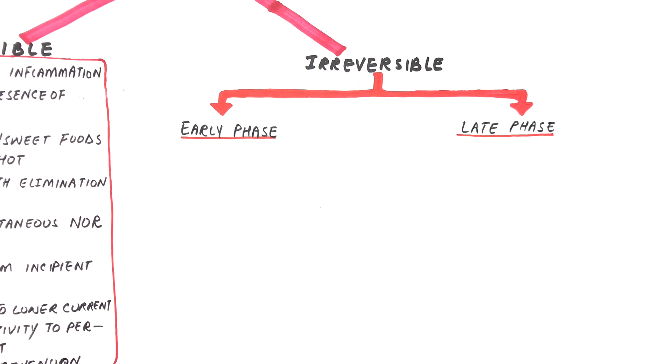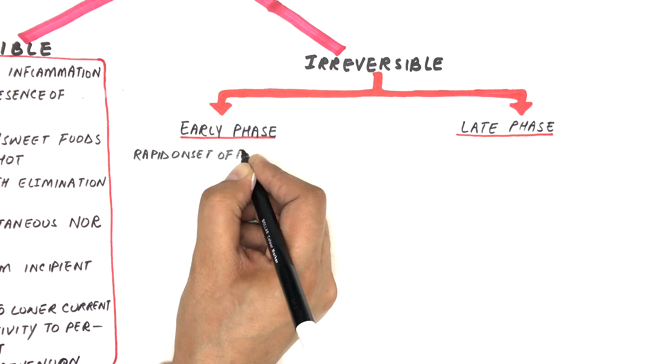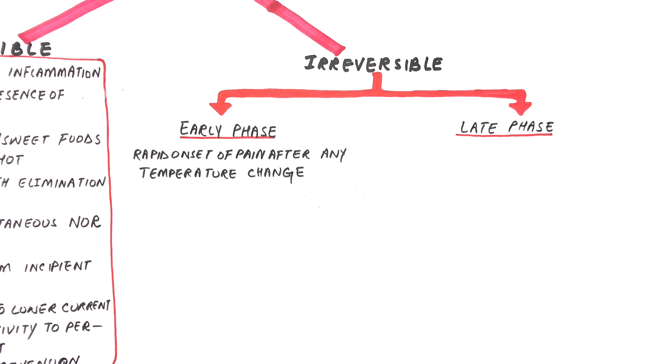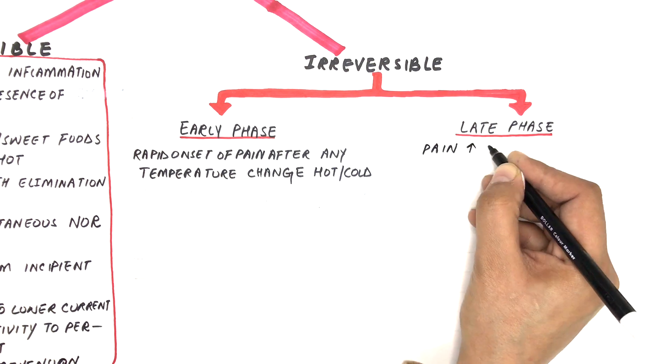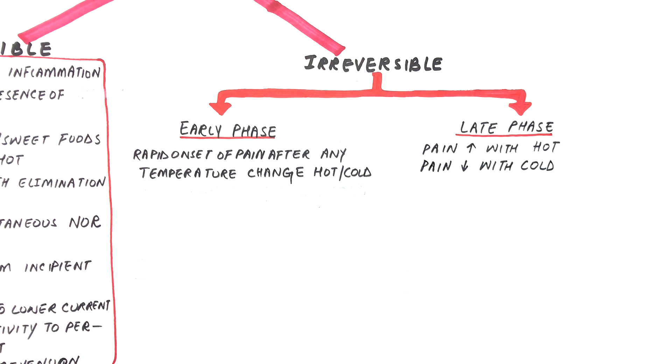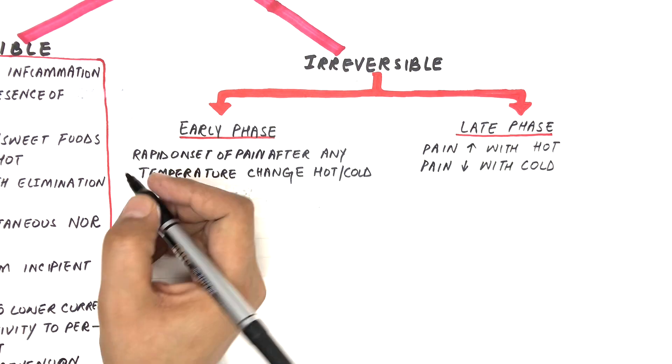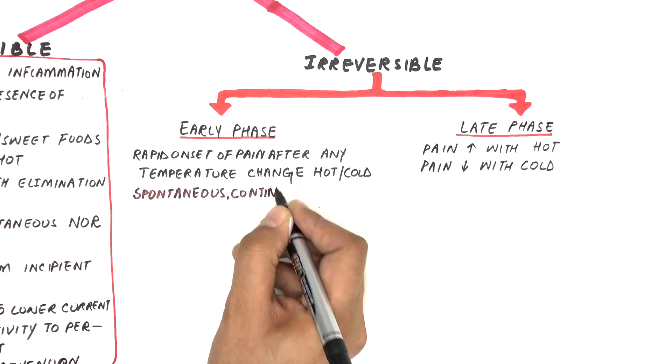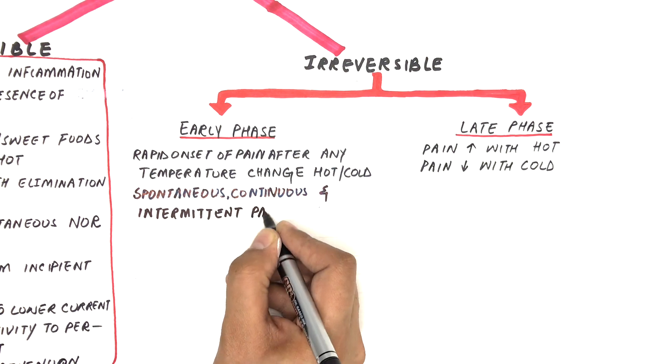In early phase of irreversible pulpitis, patients experience a rapid onset of pain after any temperature change, either hot or cold. However, in later phase of irreversible pulpitis, pain usually increases with hot stimulus and decreases with cold. Pain unlike reversible pulpitis can be spontaneous, continuous or intermittent in both phases.